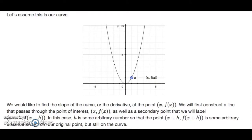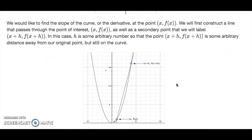Let's assume this is the graph of the function y = x². We would like to find the slope of the curve, or the derivative, at the point (x, f(x)). First, we construct the line that passes through the point of interest (x, f(x)) as well as a secondary point labeled (x+h, f(x+h)), where h is just some arbitrary number so that the second point is some arbitrary distance away from our original point but still on the curve.